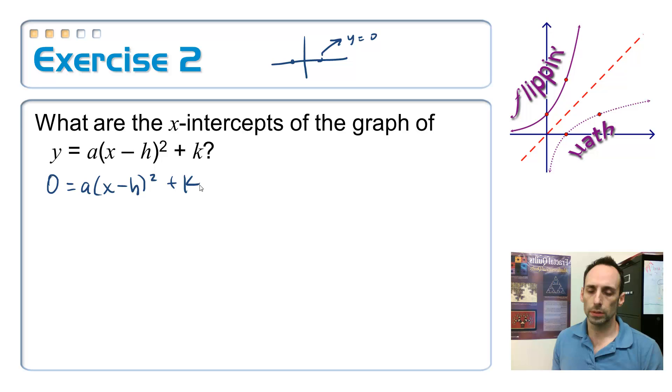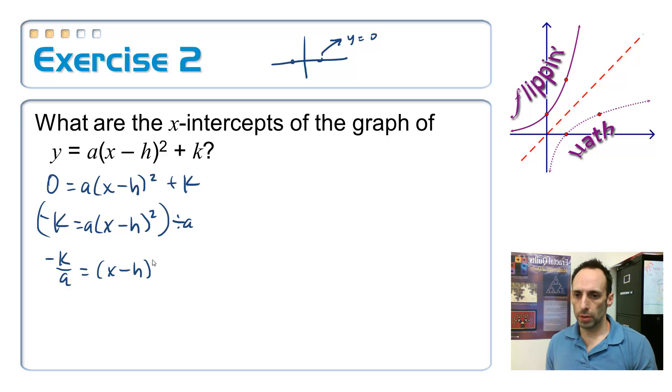How do I solve that? Just like we solved quadratic equations after completing the square, that's what this thing looks like. Let's get the k over to the left side by subtracting it: negative k equals a times x minus h squared. Should I expand or distribute the a? No, I should just divide both sides by it.